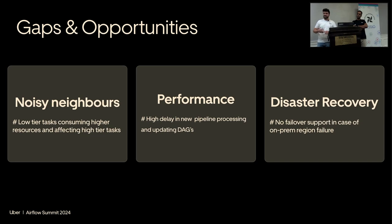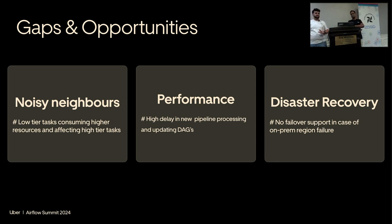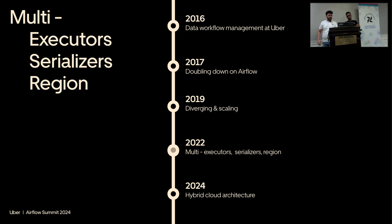Disaster recovery was a top-down, non-negotiable ask for the whole data platform at Uber — we had to have failover support between two different regions. This was mainly because Uber was on an on-prem stack. So let's see how we evolved with multi-executor, multi-serializer, and multi-region architecture.